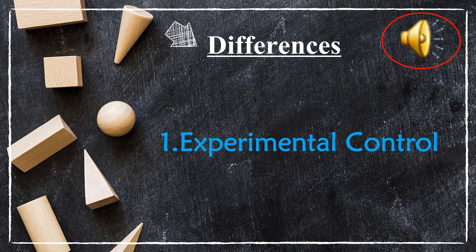It is obvious that engineering experiments differ from standard experiments. Understanding these differences helps engineers realize their ethical and moral responsibilities. The first difference is experimental control — the most important difference between engineering and other standard experiments. In standard experiments, experimental control involves selecting members for two random groups; one group receives special experimental treatment while the other, called the control group, receives none. In engineering experiments, there is usually no control group, and a control group is used only when the project is limited to laboratory experiments.